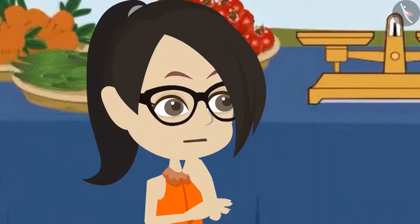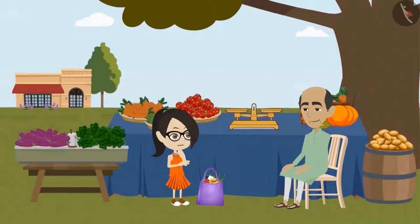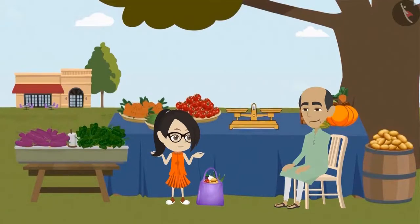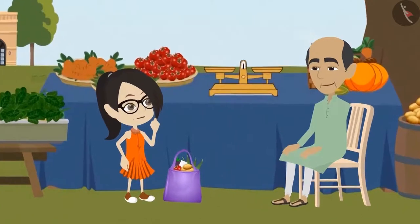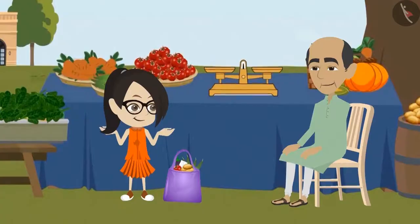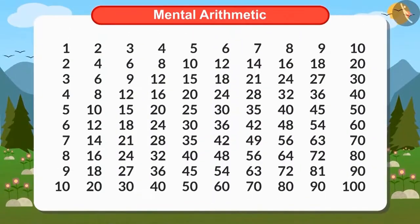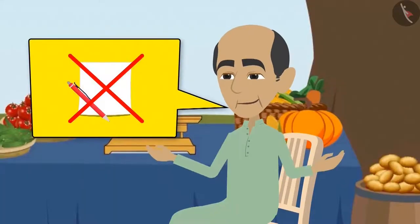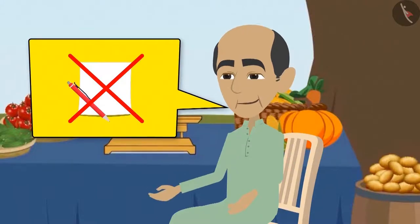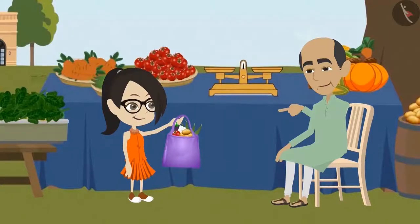Vandana is surprised to see the vegetable seller calculating so quickly. She asked, 'Uncle, how did you calculate so quickly without any paper and pen?' The vegetable uncle told Vandana that if she learns the tables well, she can also find the total value of these vegetables very easily without using a paper and a pen.